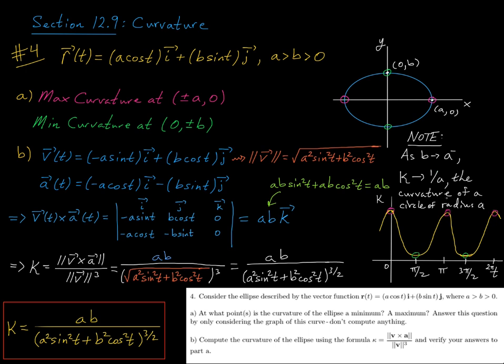Ah, but wait a minute, that is the curvature of a circle of radius a, and now thinking back to just the ellipse, if we're letting the semi-minor axis b approach the semi-major axis a.